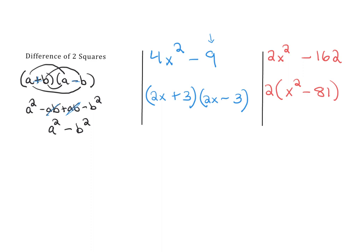Now what we have left is the difference of two perfect squares. This is a perfect square and this is a perfect square. So now we can use our special case. The two will just fall down and then this factors: the square root of x squared is just x, the square root of 81 is 9, and then we have one plus one minus.